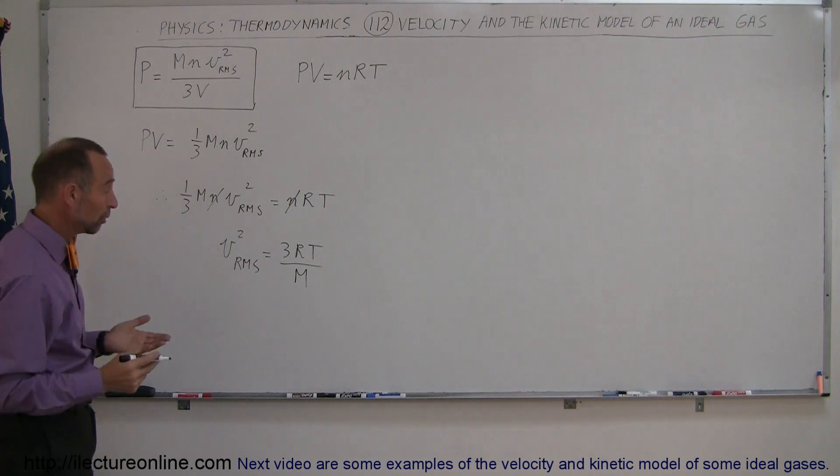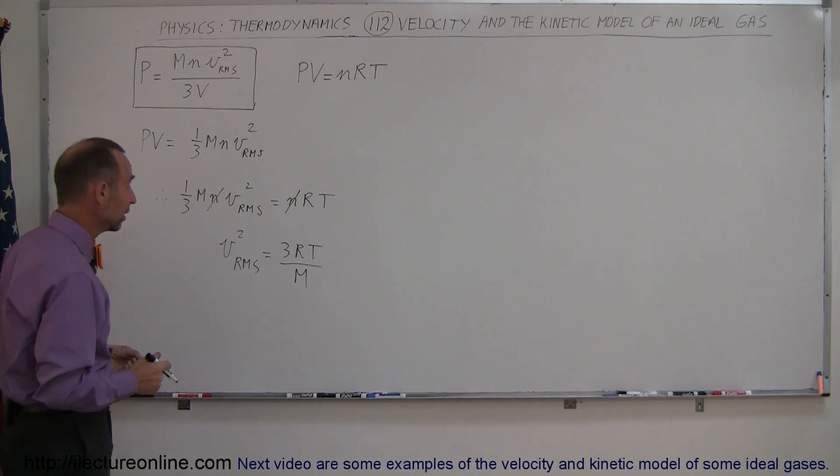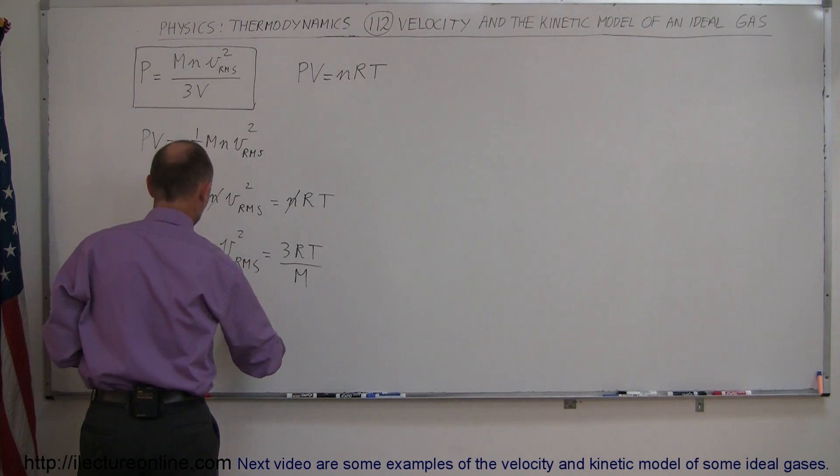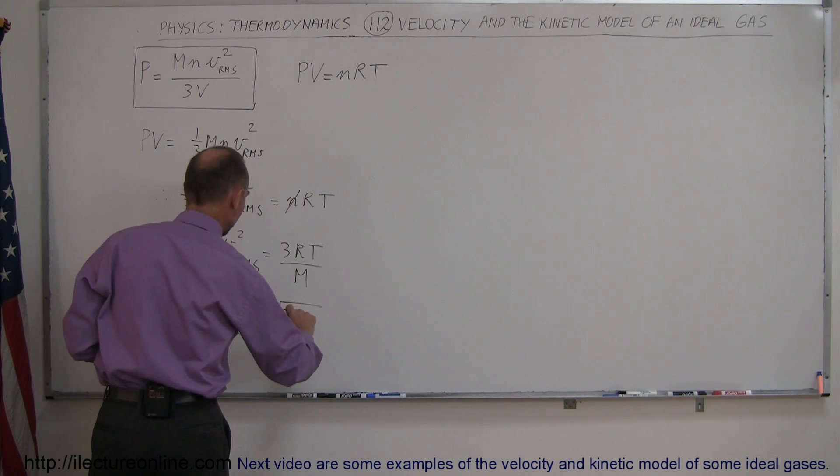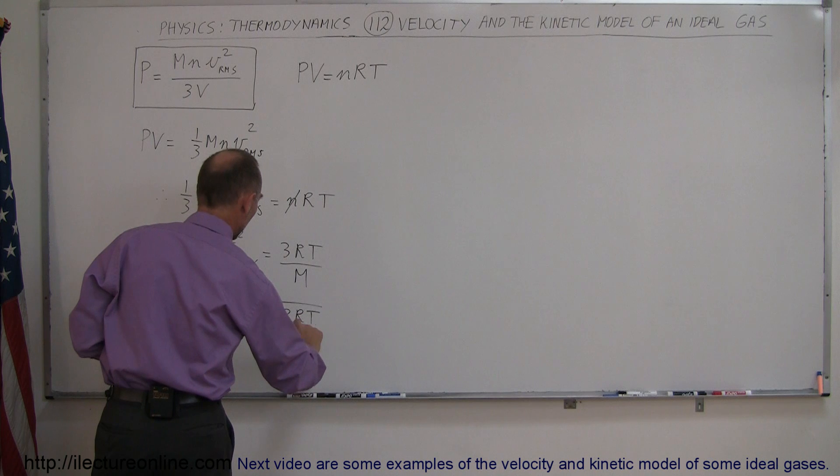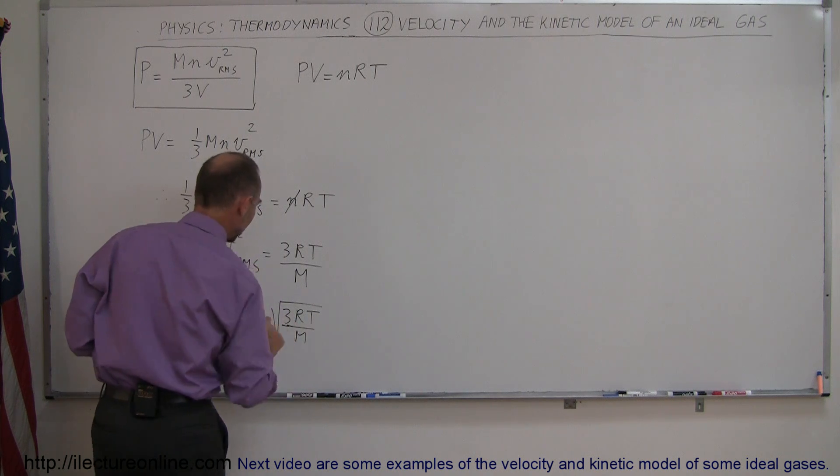And finally if I take the square root of both sides, and that's why it becomes the root mean square velocity. Root mean square velocity is therefore equal to the square root of 3RT over M. Now this is very interesting.